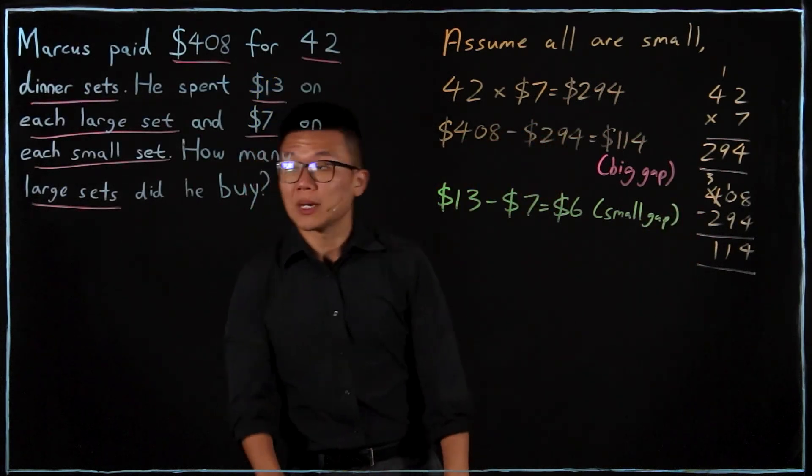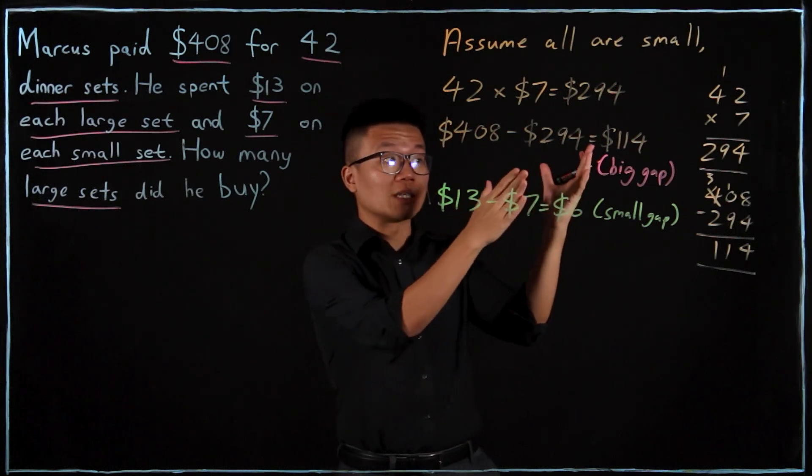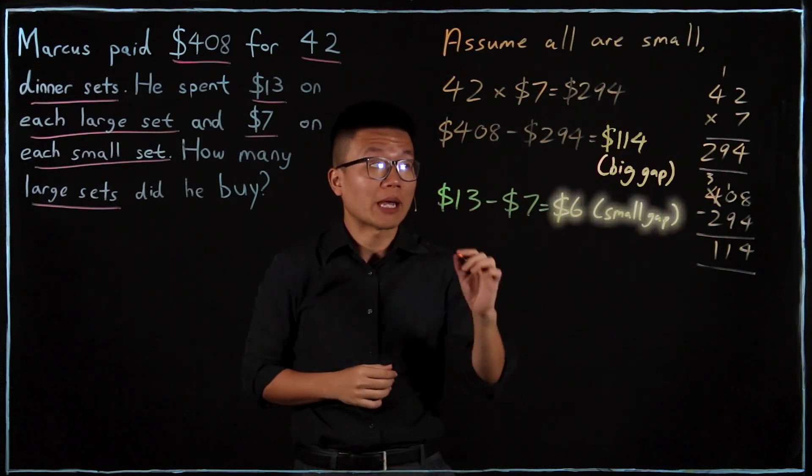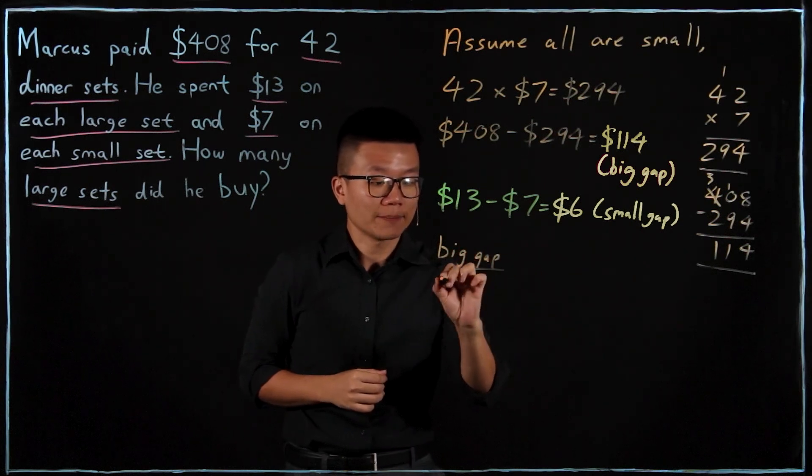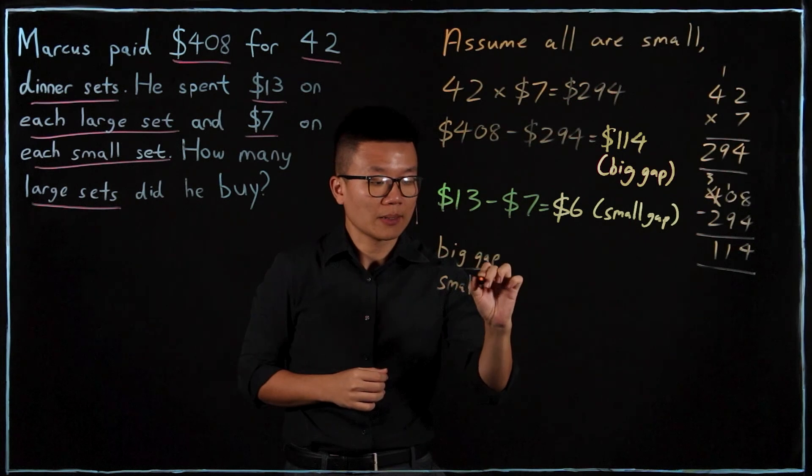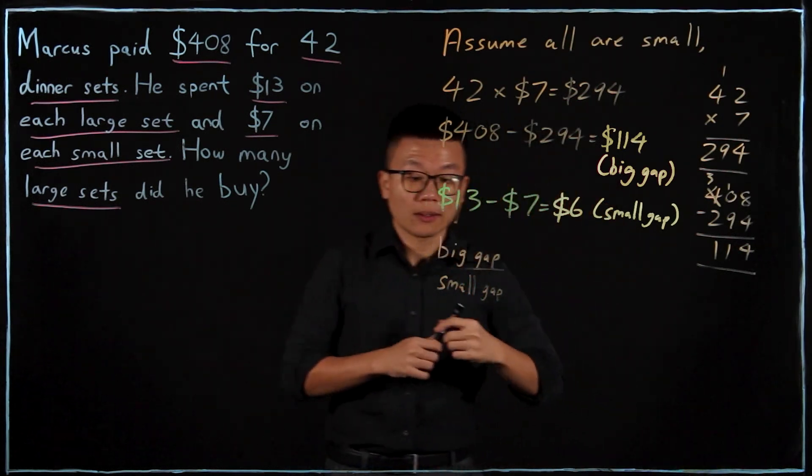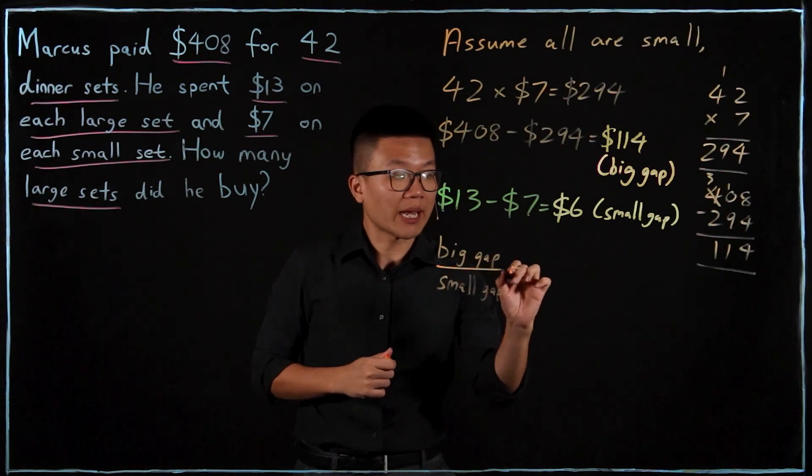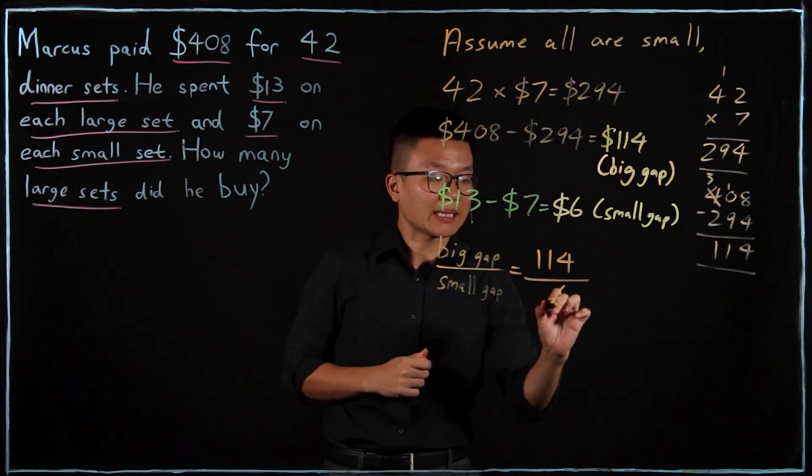Now to find the number of large sets, I'll need the division of the big gap against the small gap. So big gap over small gap, I will get $114 divided by 6.